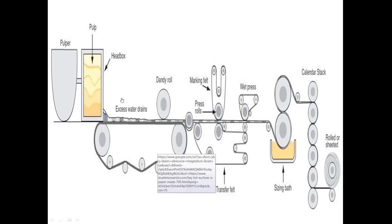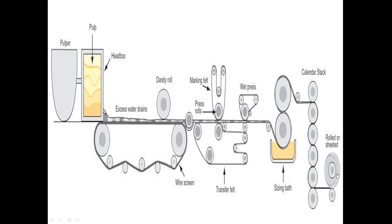The overall paper-making procedure remains consistent: hydrated fiber is released onto a belt, water drains, the film passes under rolls for pressing, then enters the drying section. After drying, sizing and coating are applied, and finally the paper is either reeled up into rolls or sheeted — meaning cut into pieces.